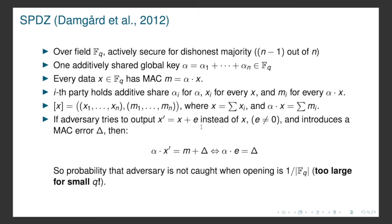If the adversary tries to output some wrong x' instead of x, introducing some error, and also introduces some error in the MAC, then in order to cheat they need to guess α. Specifically, α times the error e should equal the error in the MAC δ. The probability of this is 1 over the field size, which is 1/Q. So the probability that the adversary is not caught when opening such a value is 1/Q, which is small for large Q. However, if Q is small then this probability is too large and breaks the security of the protocol.